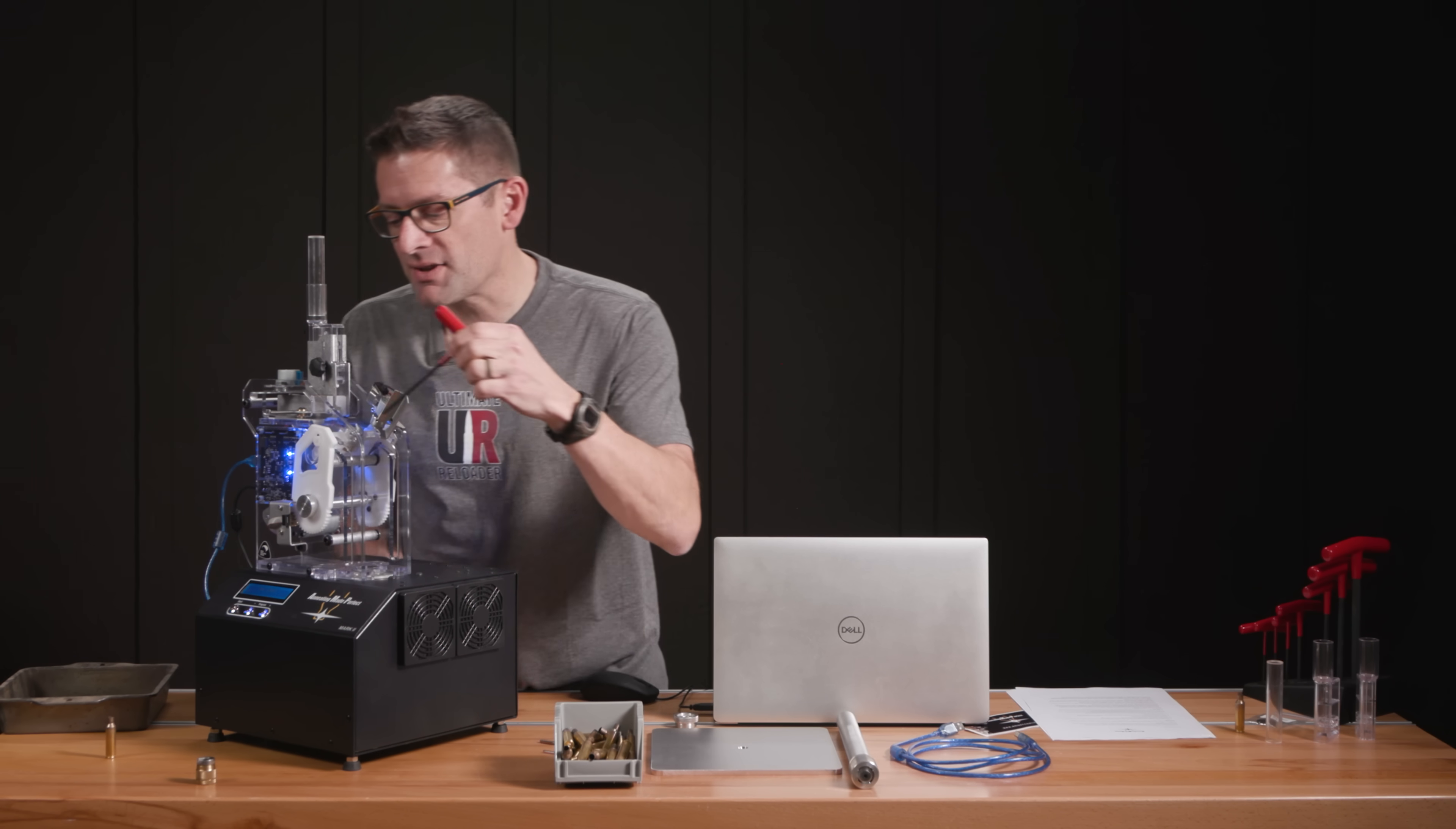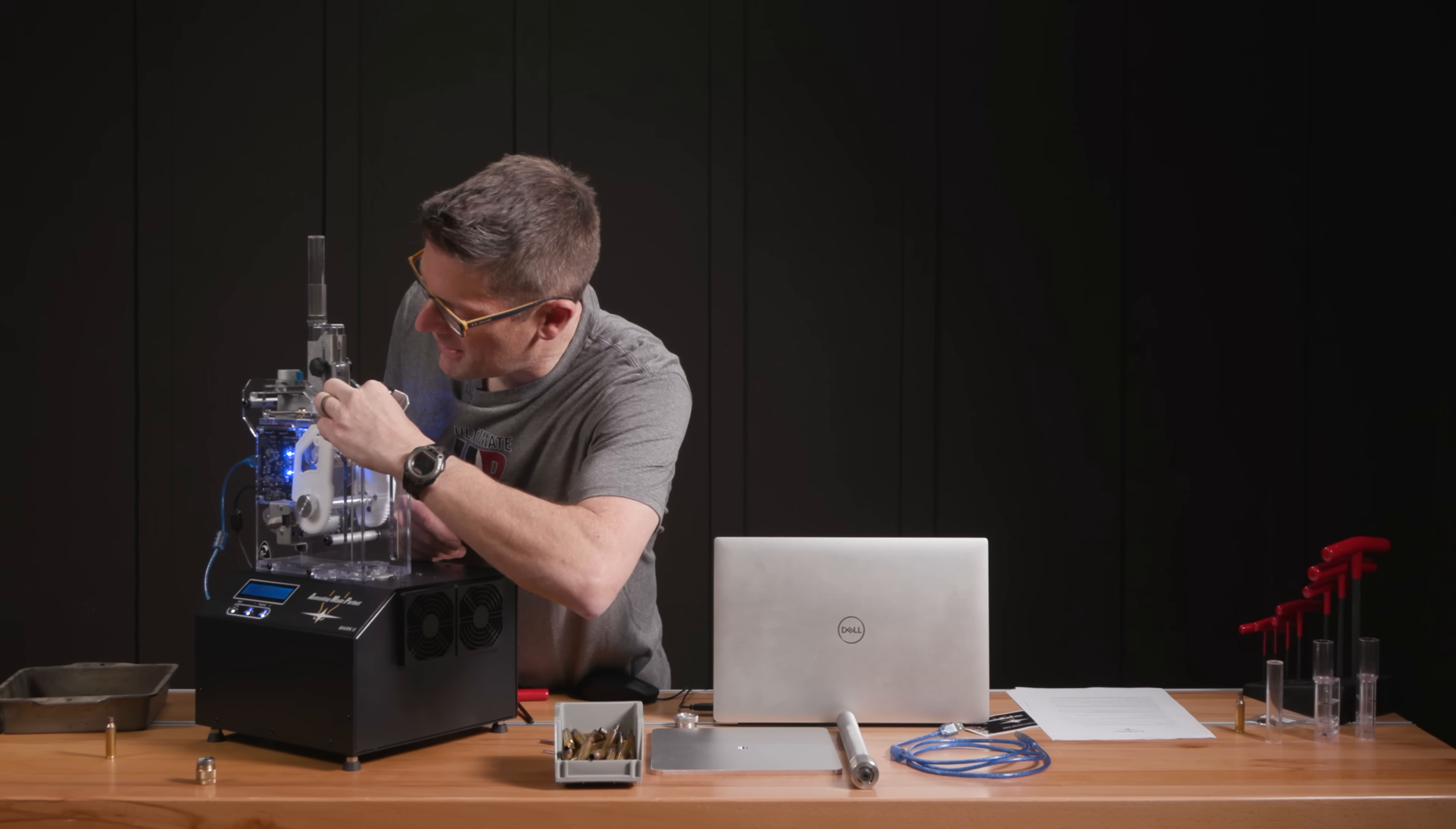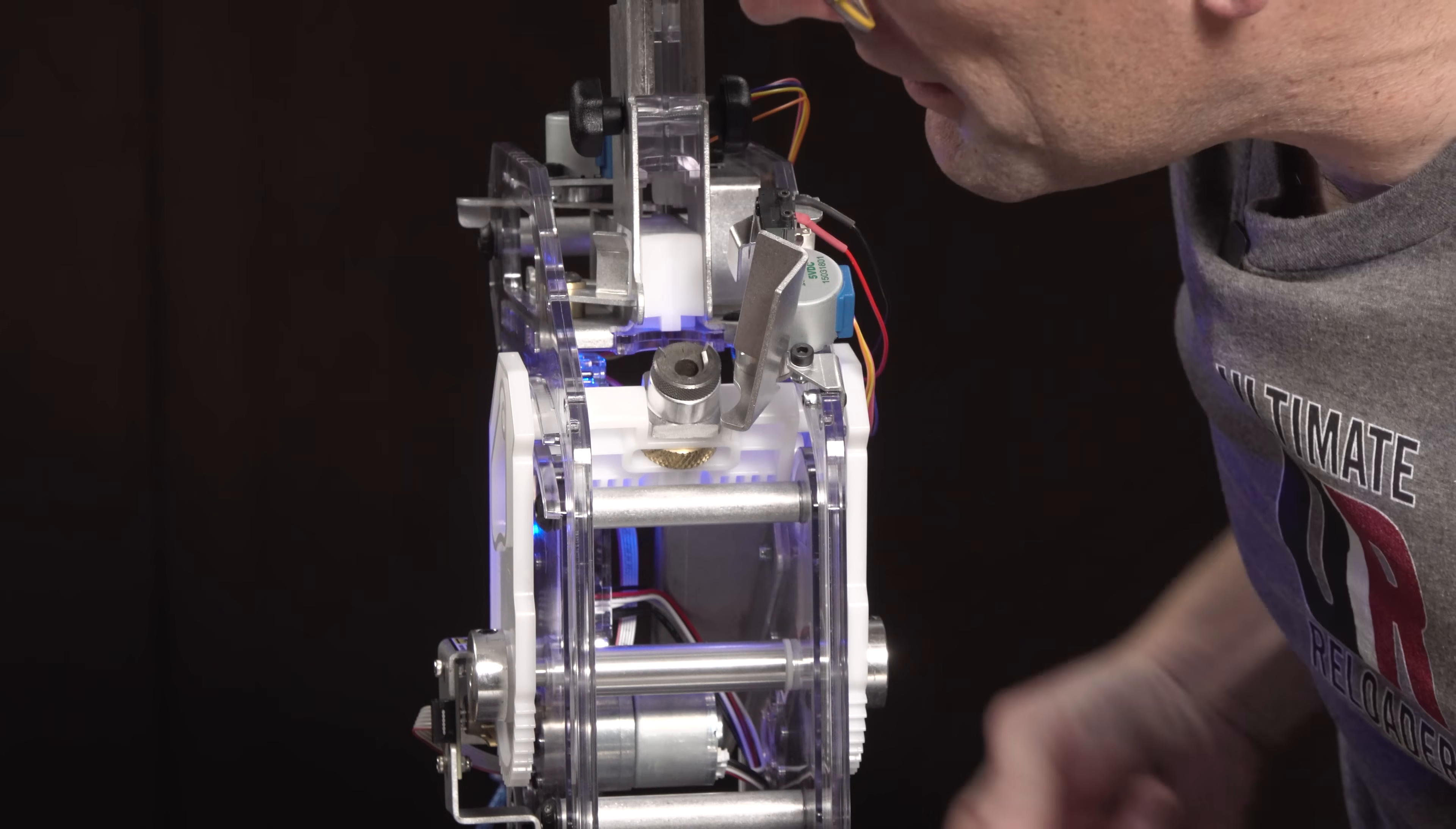We need a five millimeter hex key. There's a grub screw right in the middle of the shell holder cut out there. We're going to just drop that in, face the opening towards the feeding area and then back out the grub screw until it contacts the shell holder and tightens against it. Just like that.